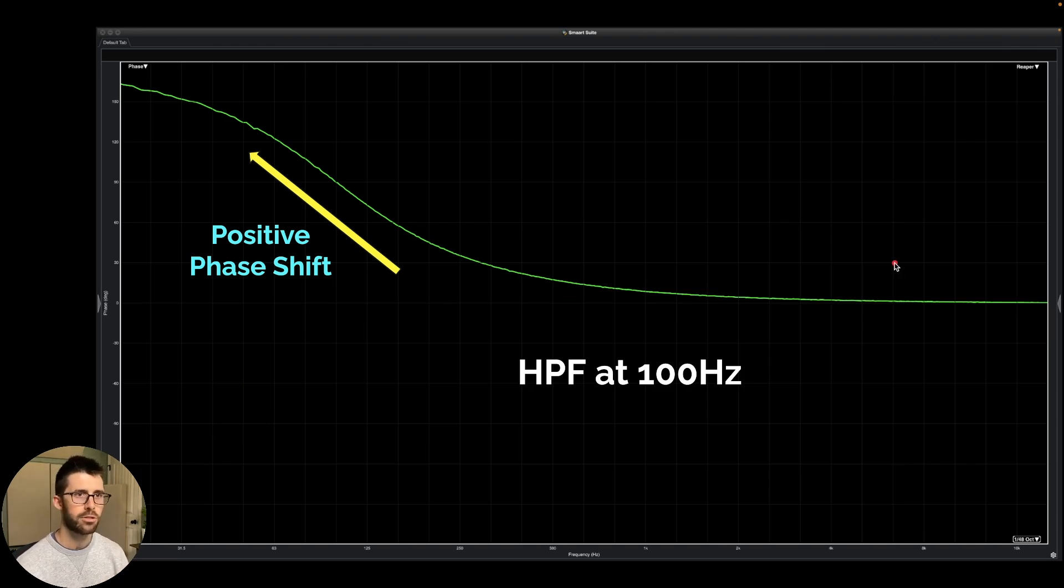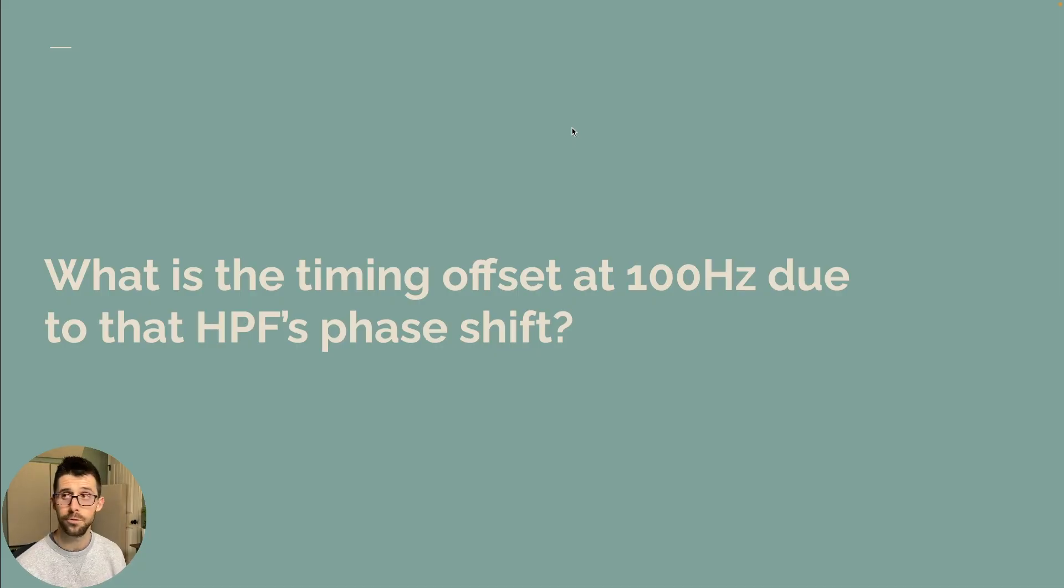So this graph here is now showing me the total phase shift over frequencies. So there's really no change at all up here in the high frequencies. But since I put the high pass filter way down here at 100 hertz, this is where we're seeing most of the change. So we're seeing a positive phase shift. So the lower frequencies are now being shifted in their phase cycle. So this is the high pass filter at 100 hertz.